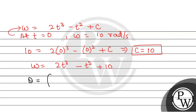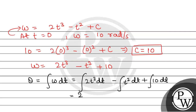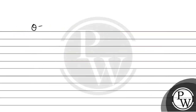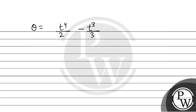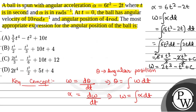Now we integrate omega to find theta. The integration of (2t cubed minus t squared plus 10) dt gives us: 2t cubed integrates to t to the power 4 by 2, minus t squared integrates to t cubed by 3, plus 10t, plus a constant C. So theta equals t to the power 4 by 2 minus t cubed by 3 plus 10t plus C.